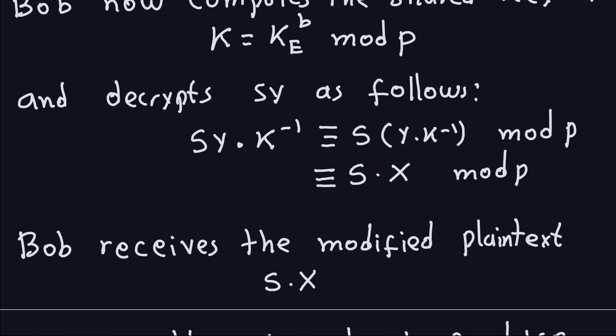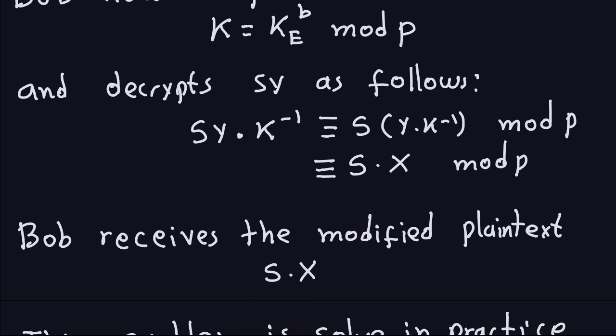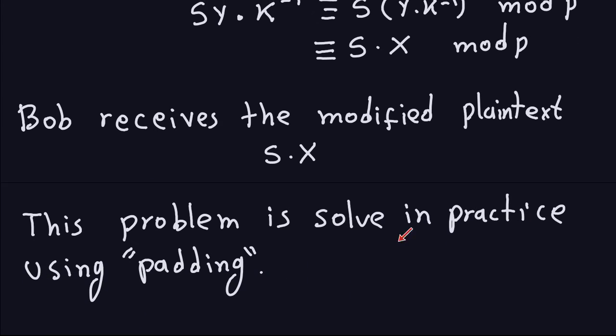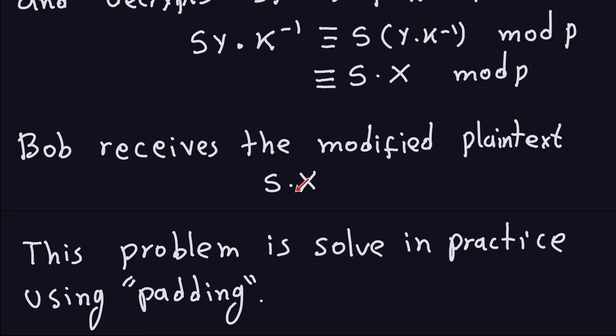Bob doesn't know that, but it is there. So Bob receives the modified plaintext S times X, which is of course not what Alice intended. Alice intended to send X, but Eve modified ciphertext in such a way that when Bob receives it, then it's multiplied by S. Now of course Bob doesn't know that at this point. So now the problem of this malleability, which in the final effect will change the plaintext, would be pretty bad if you could do that.